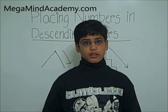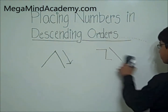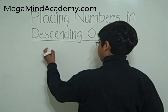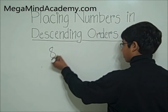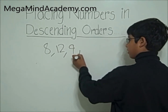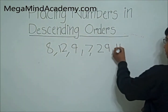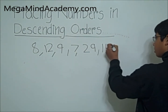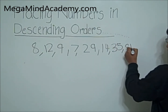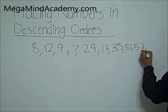Now let's look at an example. Let's say the numbers are: 8, 12, 9, 7, 29, 14, 35, 81, 52, and 63.